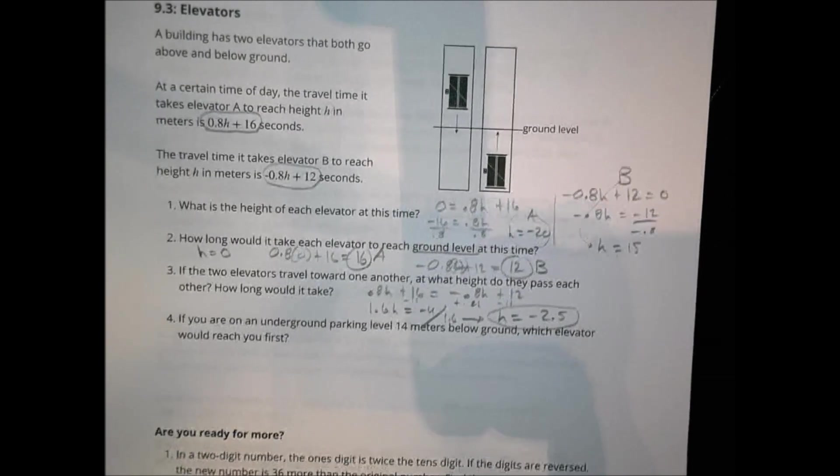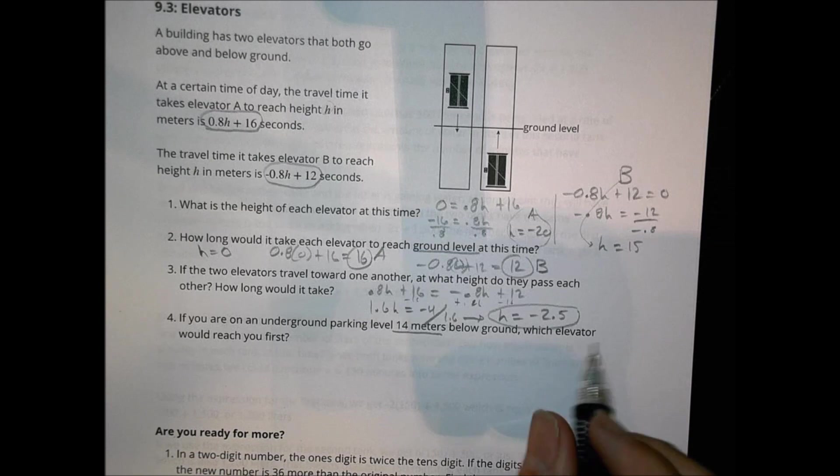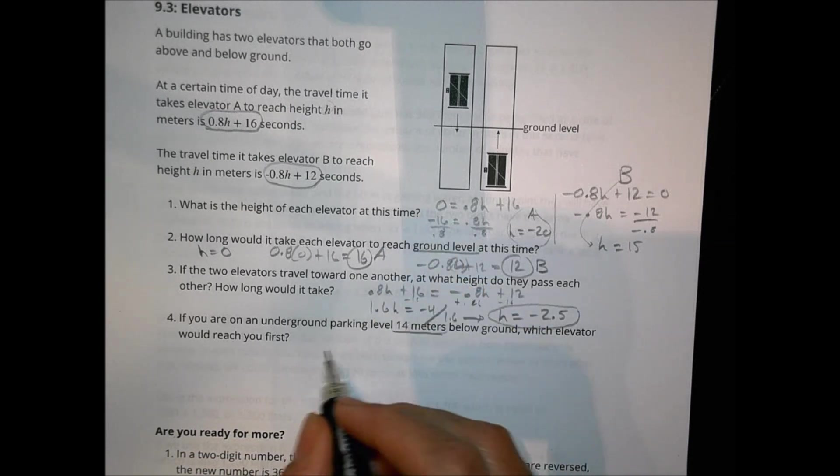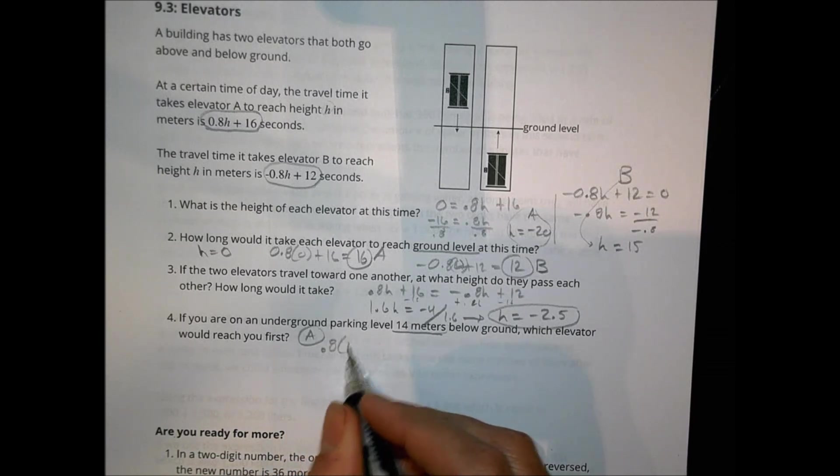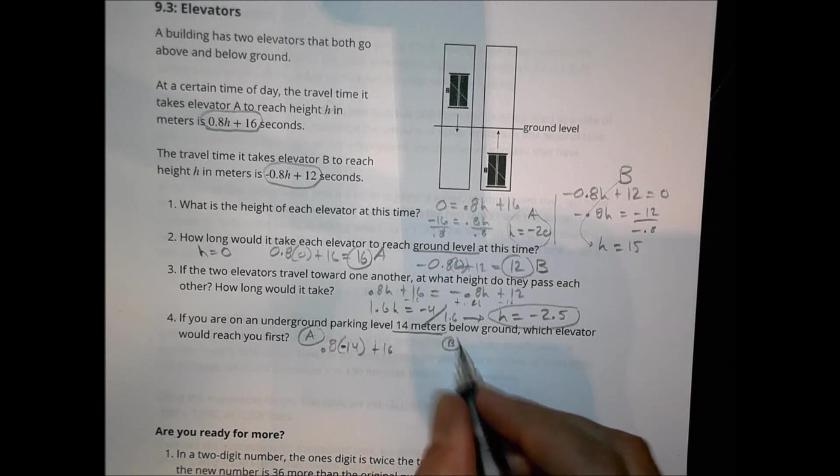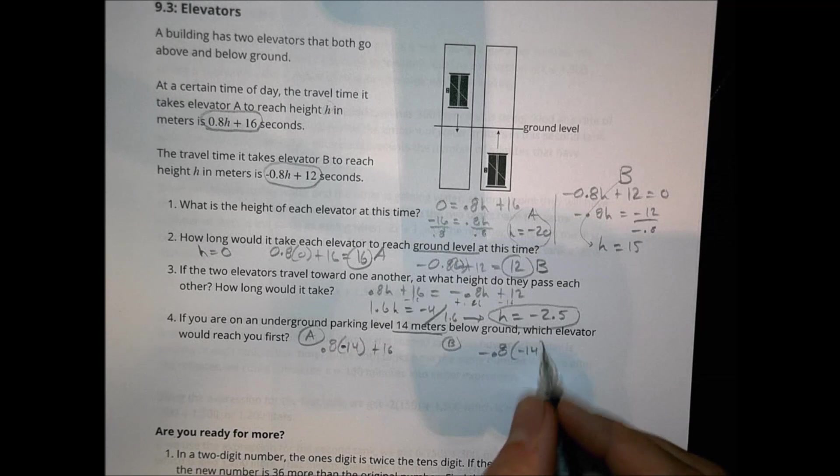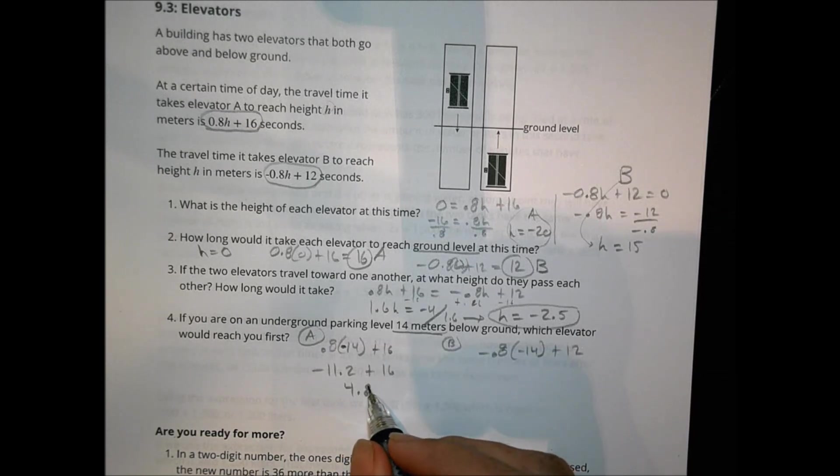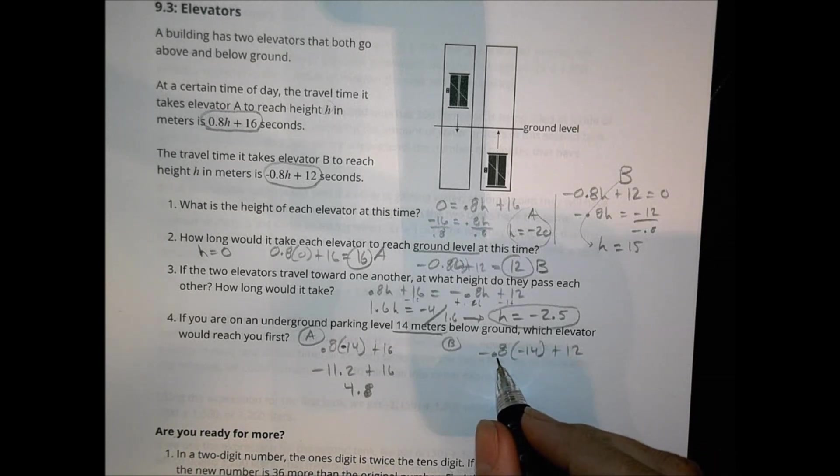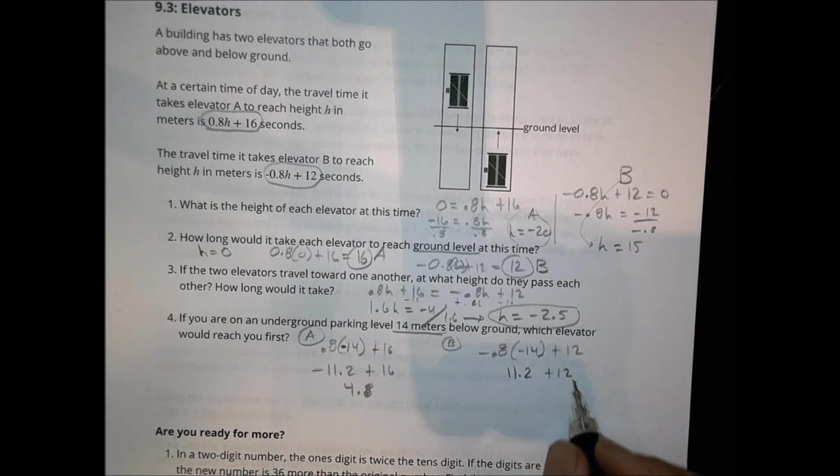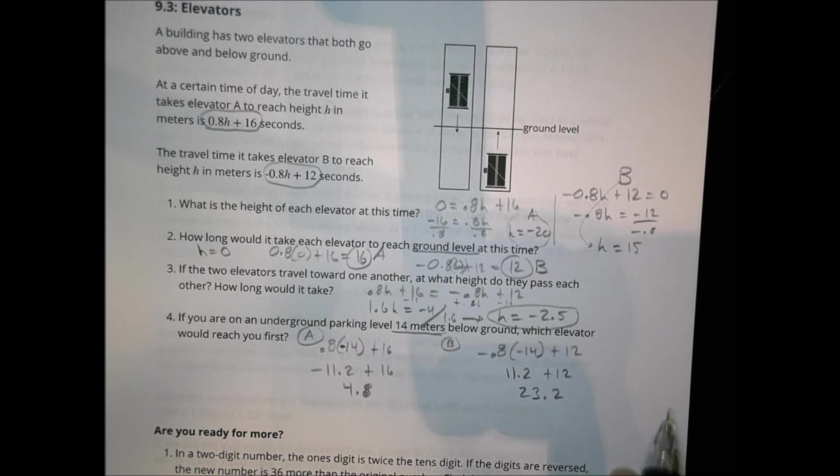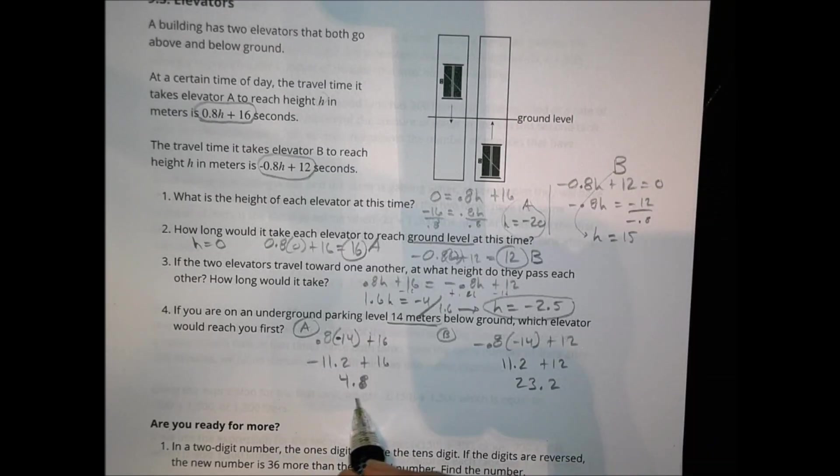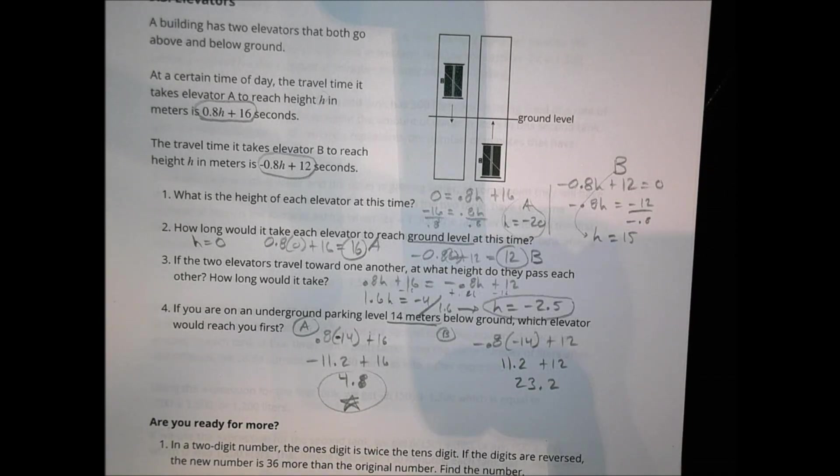This fourth question here says, if you're in an underground parking lot 14 meters below ground, which elevator would reach you first? This is like the zero question up here, number two, so we just plug that value in. Here's for A, we're going to have 0.8H times 14, and below ground, so let's make that negative 14, plus 16, and for B, we would say it's negative 0.8H times negative 14 plus 12. So 0.8H times negative 14 is negative 11.2 plus 16. That's going to be a total of 4.8. That's how long it would take you, 4.8 seconds there. And over here, we're going to say negative 0.8H times negative 14 is 11.2 plus 12. And that's going to be 23.2 seconds. Because we want it to get you the fastest, we want the shortest amount of time, so that would be elevator A, is going to reach you in the shortest amount of time.